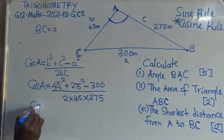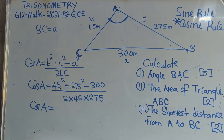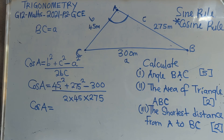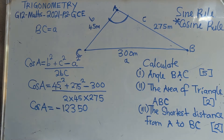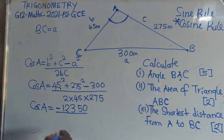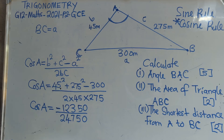Cos A is equal to — you multiply what is on top. So: 45 squared plus 275 squared minus 300 squared. The answer that we are getting is negative 23,350. Over what is down: 2 times 45 times 275, which gives 24,750.